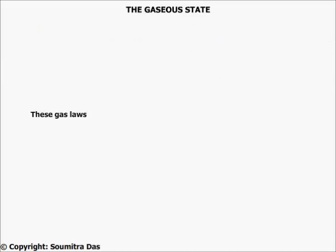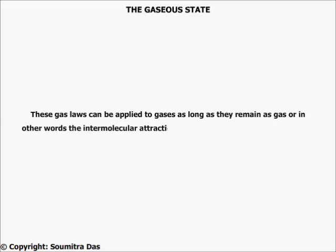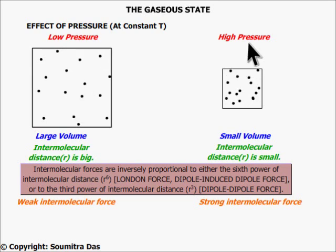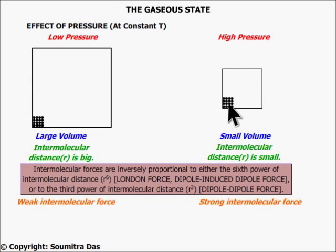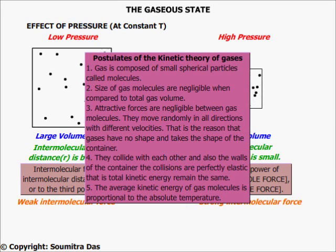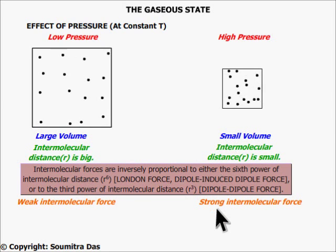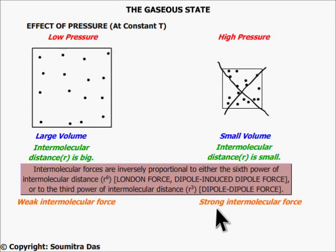These gas laws can be applied to gases as long as they remain as a gas, or in other words, the intermolecular attraction between the molecules is very weak. At high pressure, the volume is small and the volume of the molecules is no longer negligible compared to the total gas volume, as assumed in the kinetic theory. And the intermolecular attraction is no longer weak. In other words, the gas laws do not hold good at high pressure.